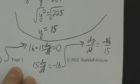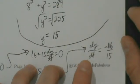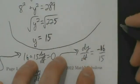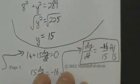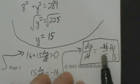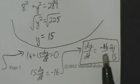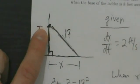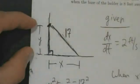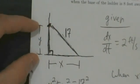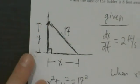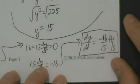Your answer should always have units. Since we're looking for a rate and the problem gives feet and seconds, the units are feet per second. So dy/dt = −16/15 feet per second. The negative sign makes sense — if a rate of change is negative, the quantity is decreasing. As the top of the ladder slides down the wall, Y gets smaller and smaller, so dy/dt should indeed be negative.